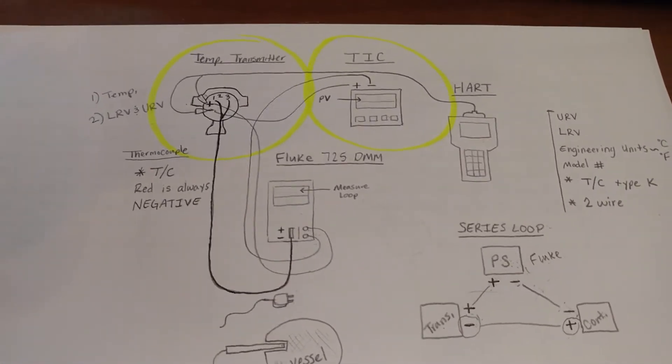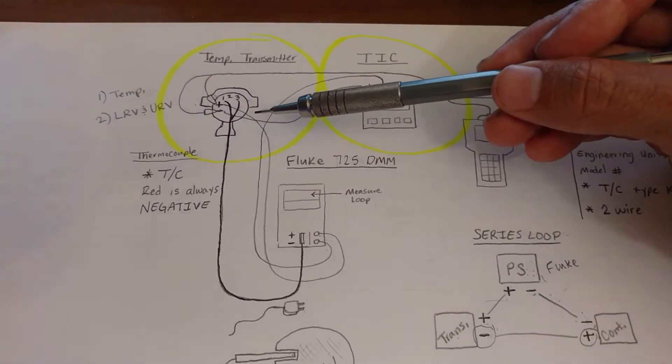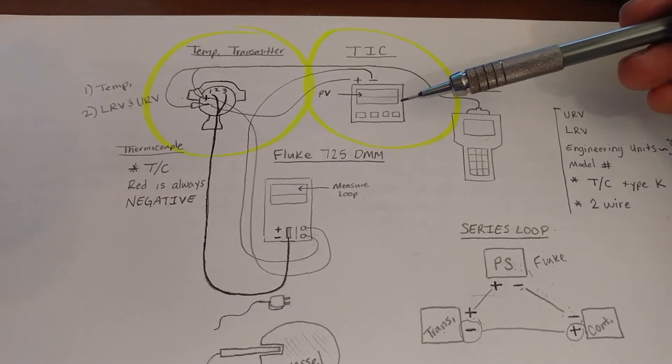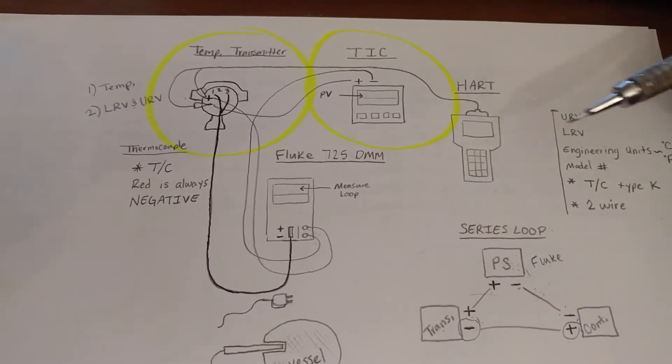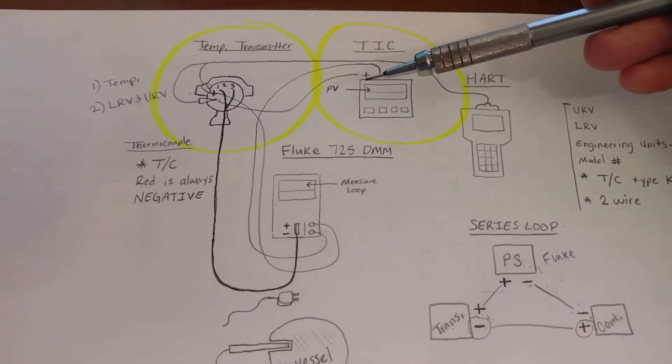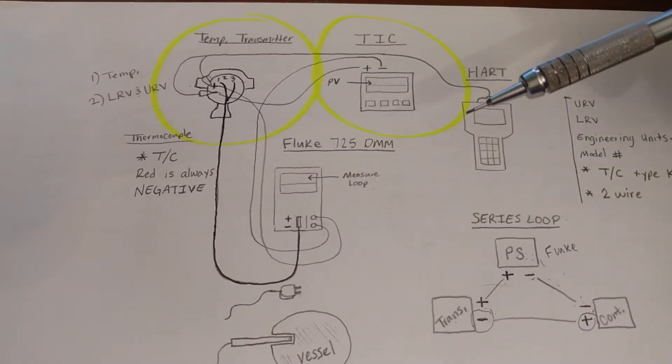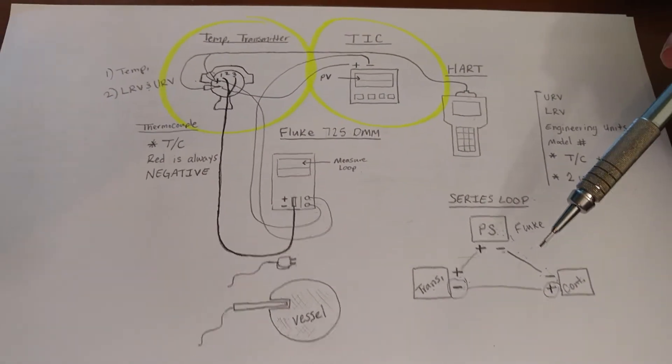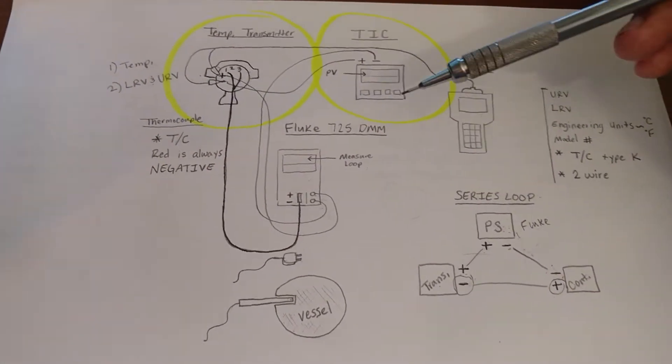Stuart Brunt and today I'm going to talk about two devices. I'm going to talk about a temperature transmitter and a temperature indicating controller. I'm going to explain how to properly connect these devices to each other and to other devices in a series loop so that we can properly calibrate and test them.